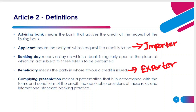Complying Presentation is a presentation made in accordance with three things: it needs to be in line with the terms and conditions of the LC, in line with the applicable provisions of UCP 600, and in line with the International Standard Banking Practice (ISBP). ISBP is a further extension to the LC that elaborates on these terms and regulations. Remember, there are three things you need to comply with for a complying presentation.